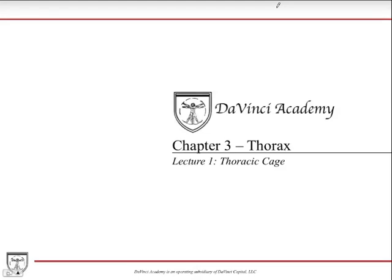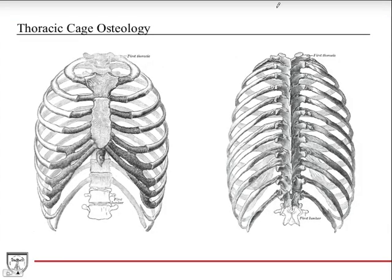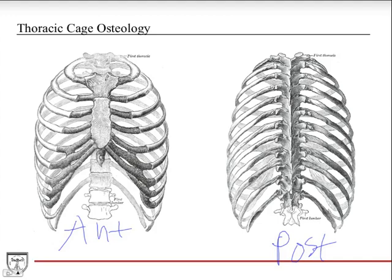This is the first of our lectures for the thorax chapter, and we're going to begin with the thoracic cage. Here's a picture of the thoracic cage, both from an anterior and a posterior point of view. In the anterior view, you can see you have 12 sets of ribs on each side, and they join here in the sternum. In the posterior view, they stem off of the thoracic vertebrae.